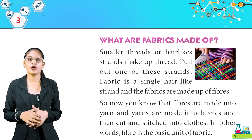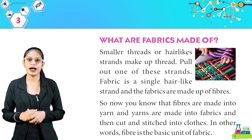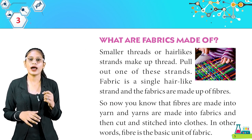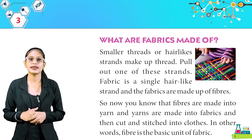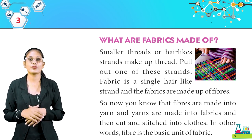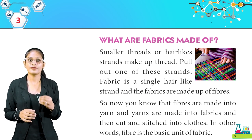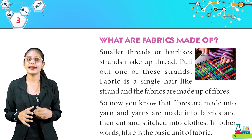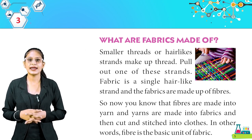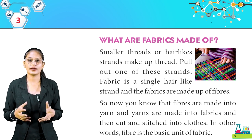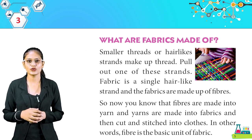What are fabrics made of? Fabrics are made of small threads or hair-like strands. A fiber is a single hair-like strand, and fabrics are made up of fibers. Fibers are made into yarn and yarns are made into fabrics, which are then cut and stitched into clothes. In other words, fiber is the basic unit of fabric.